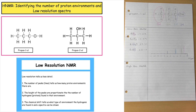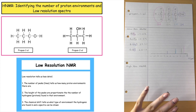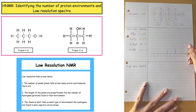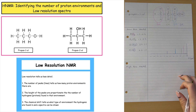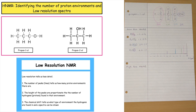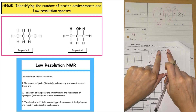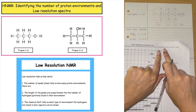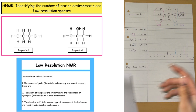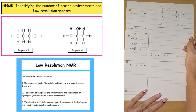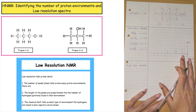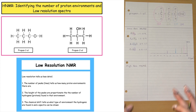We also need to always remember to plot a line at zero. The height doesn't matter, but in our data booklet there will always be a line at zero parts per million representing the TMS, so we must always include that in our spectra.